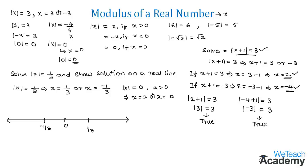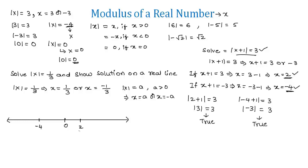Now let us represent both solutions on the number line. x equals minus four is on the left side of zero, and x equals plus two is on the right side of zero.